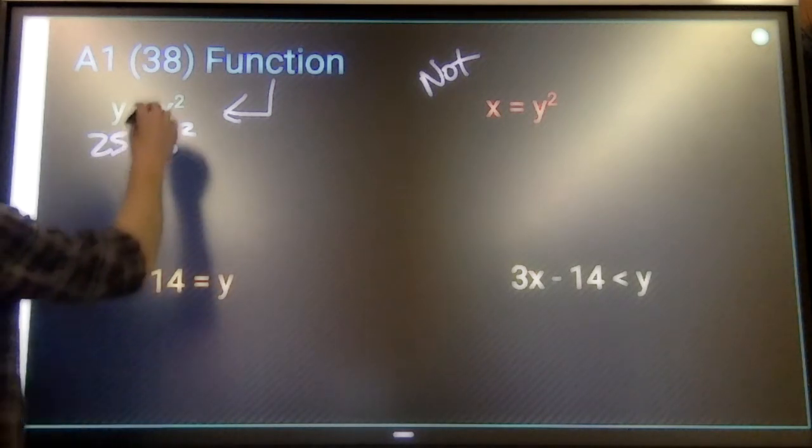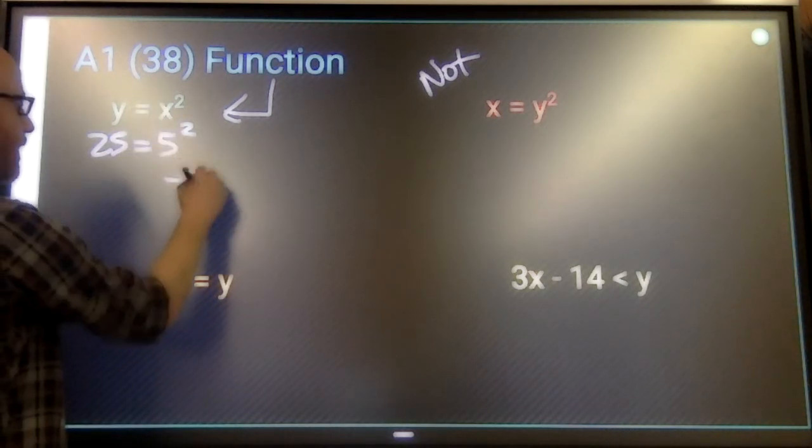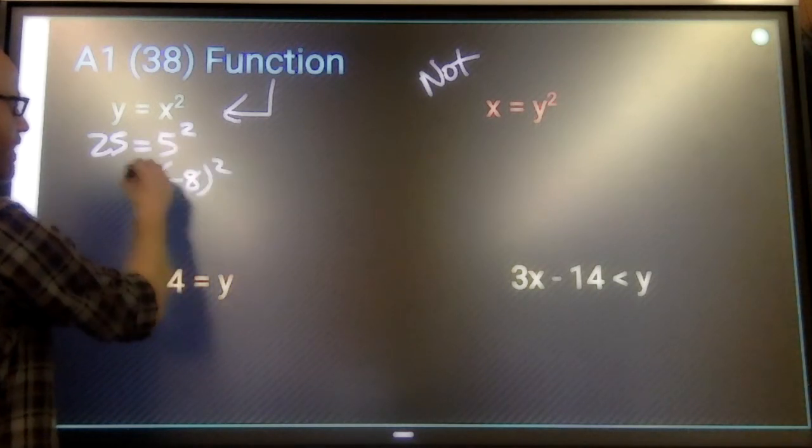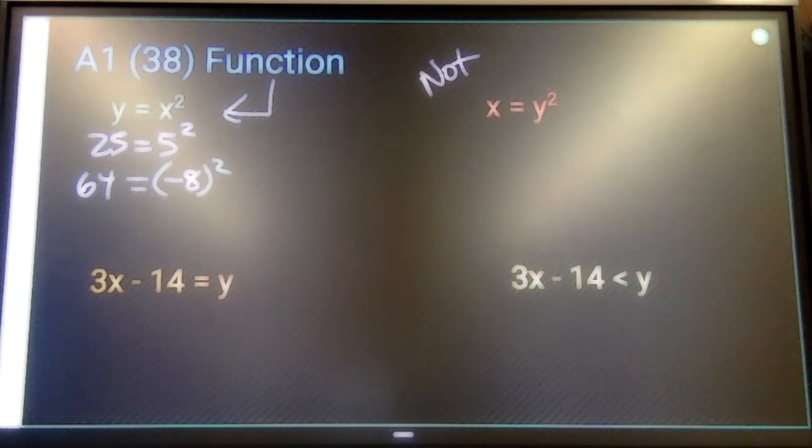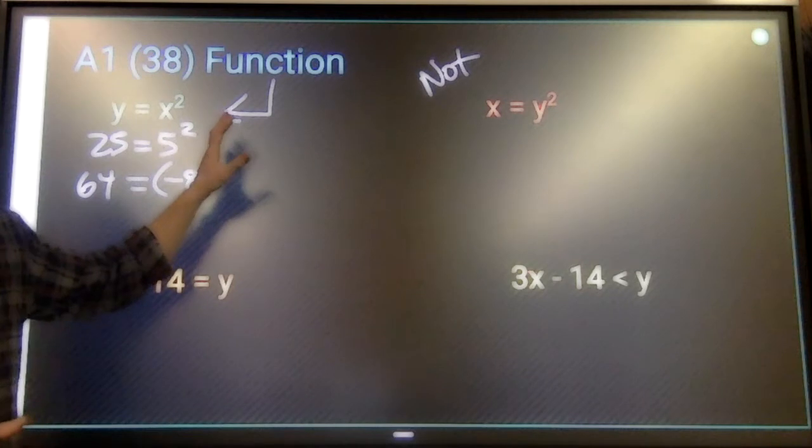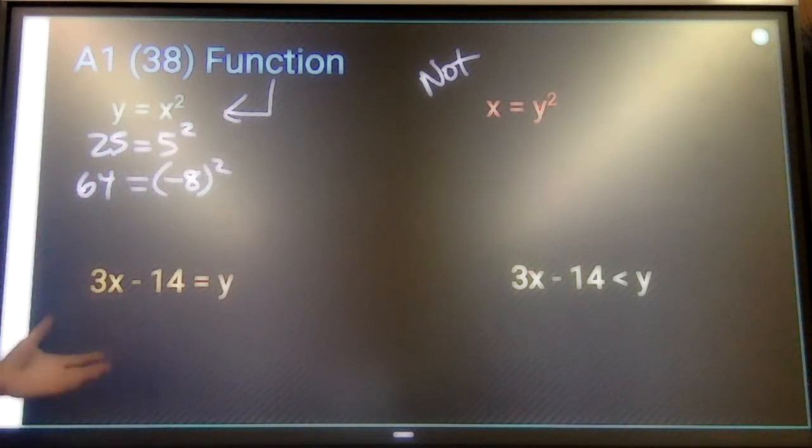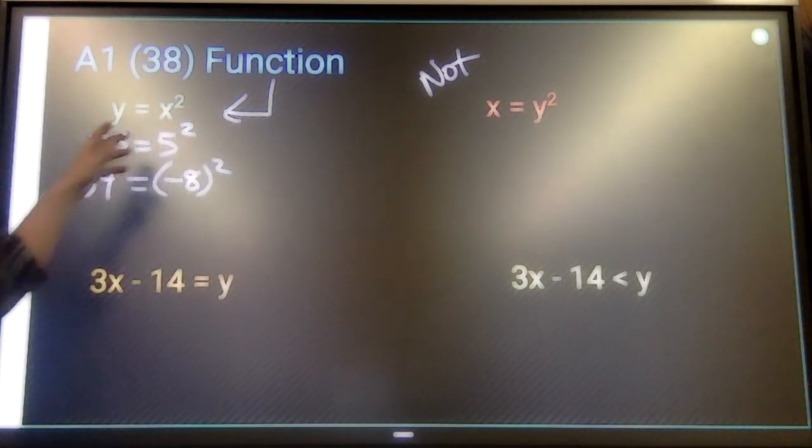If I say, choose x, negative eight squared, there's only one possible answer. 64. So every x that I choose, there's only one possible outcome. That's a function. For one input, there's only one outcome.